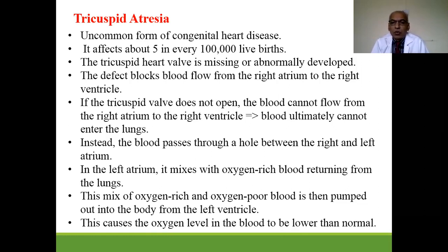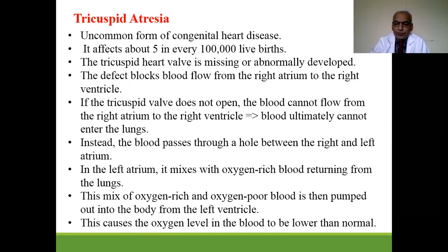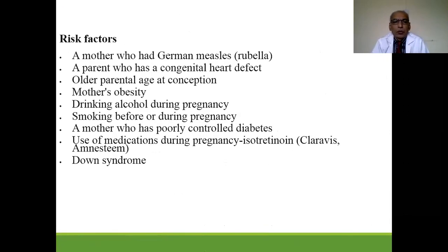Instead, blood bypasses through a hole between the right and left atrium — the atrial septal defect — mixing oxygen-rich and oxygen-poor blood in the left atrium. Risk factors include maternal German measles, parental congenital heart disease, older parental age, maternal obesity, alcohol, smoking, poorly controlled diabetes, certain medications, and Down syndrome.